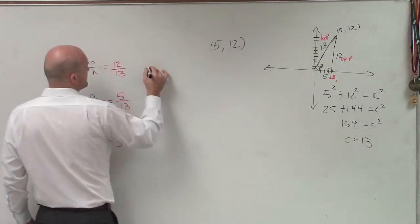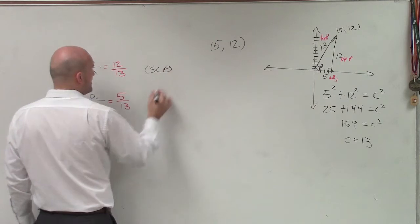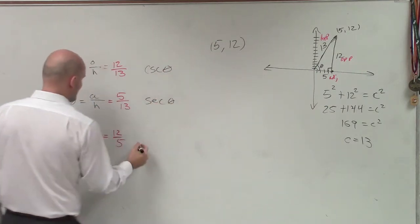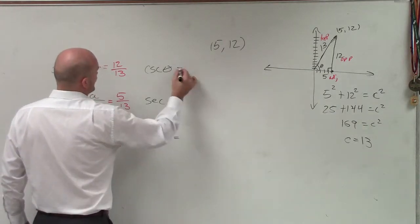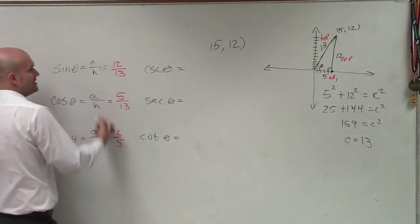So the reciprocal identities for sine would be cosecant of theta. For cosine, we have secant of theta. And for tangent, we have cotangent of theta. So the reciprocal identities, remember, is going to be reciprocal of the ratio.